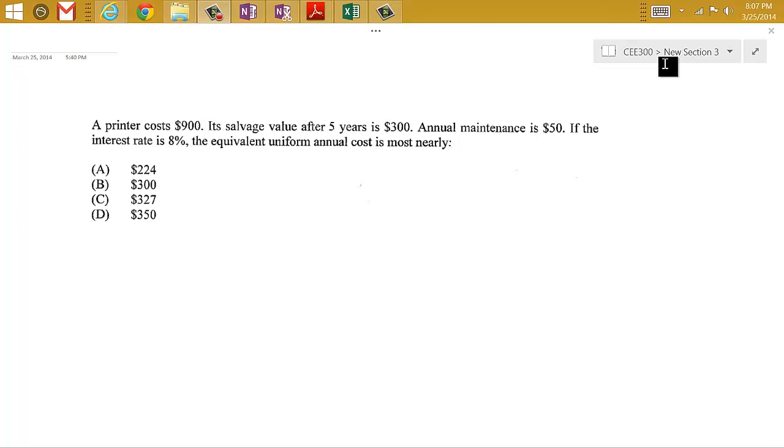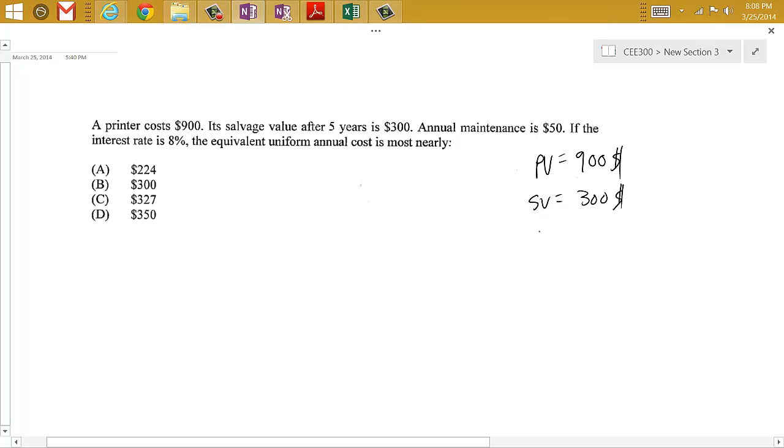So in our case, we have a printer whose present value is $900. It has a salvage value of $300 after N equals 5 years and has an interest rate of 8%.